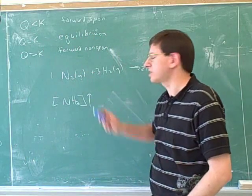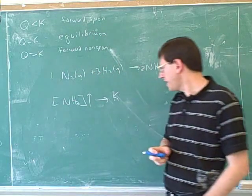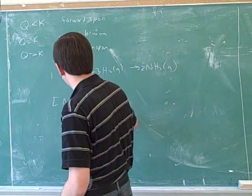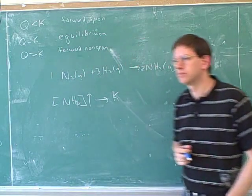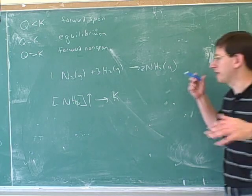Let's say you increase the concentration of ammonia. Will that cause K to go up or down? It's not going to cause it to go anywhere, right? Because K is constant. OK, good. Yeah, trick question.